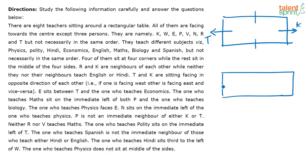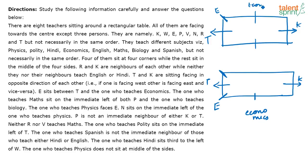Now I have two possibilities. E is sitting between T and the person teaching economics, so I'm considering two cases: one possibility is E is here, another possibility is E is on the other side. If E is here, this position has to be economics; if E is there, that other position has to be economics. E is sitting opposite to the person teaching physics, and they are facing each other.